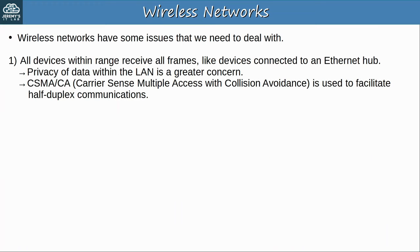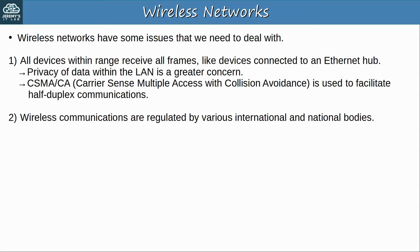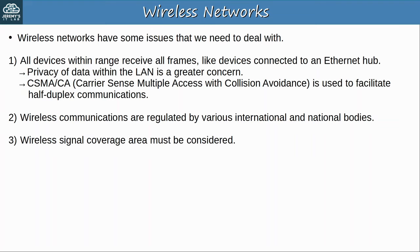Another issue is that wireless communications are regulated by various international and national bodies. You aren't allowed to transmit data on any channel you want, and which channels you are allowed to use can vary depending on the country. The 802.11 standard outlines which frequencies can be used for wireless LANs, and devices are designed to use those frequencies. We also must consider the wireless signal coverage area. With wireless connections, there are other factors we must consider, including signal range and several factors that affect how far a signal can travel intact: absorption, reflection, refraction, diffraction, and scattering.